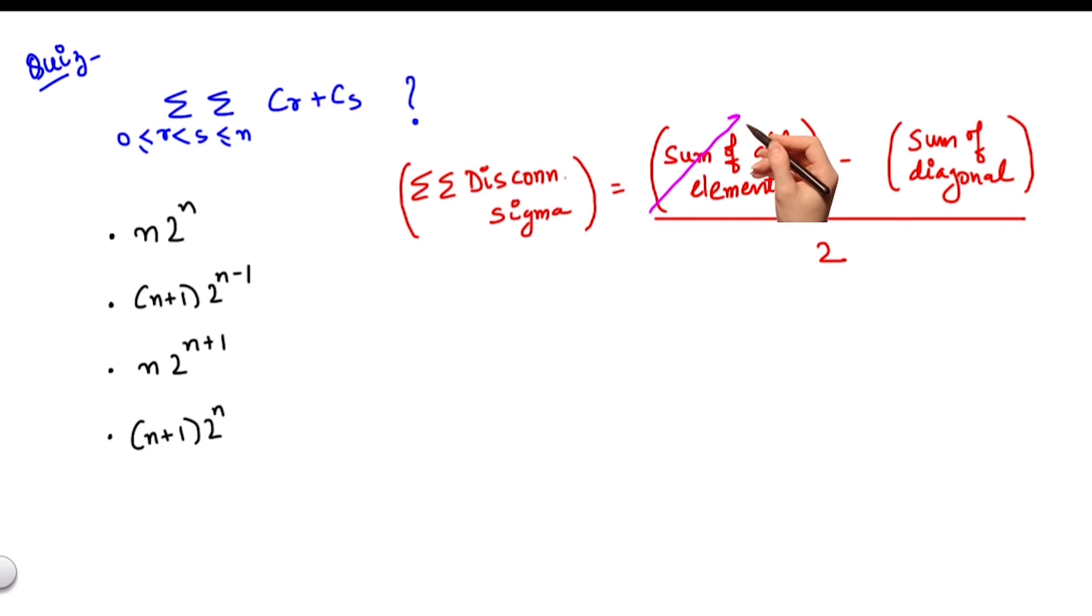Sum of all the elements is nothing but double summation cr plus cs, r from 0 to n and s from 0 to n.